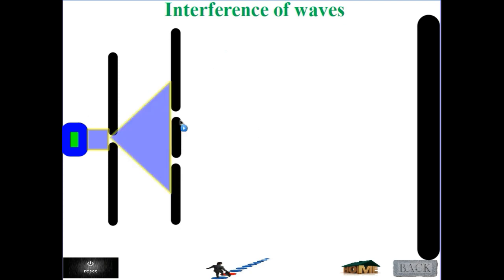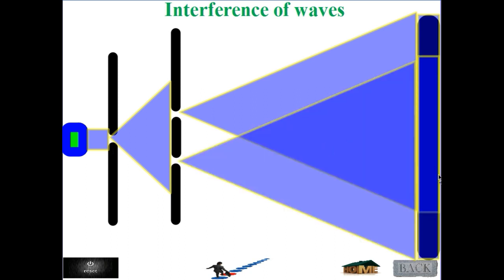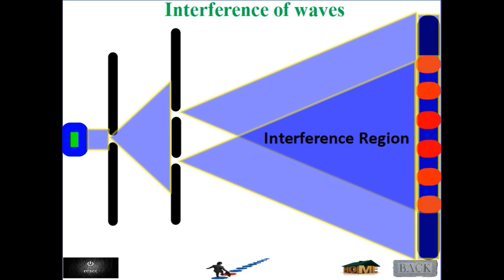If light illuminates the two slits, the first slit will illuminate a region on the screen — the blue region — and at the same time the second slit will illuminate this region as well. So we recognize a region of interference. Here we get an interference region and we will observe on the screen an interference pattern. We will discuss it later and compare it with the diffraction pattern.